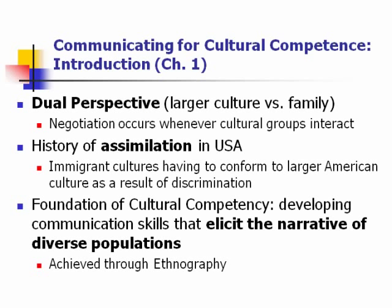Let's start with a discussion of chapter one. The author talks about this idea of a dual perspective and how we are often interacting with people who are from different cultures — there's a larger culture, but then there's also another culture representing a group outside of our own. The author also talks about a heavy history of assimilation within the United States, where immigrant cultures or cultures outside of the majority have often been forced to conform to the larger, dominant Western culture.